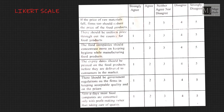The Likert scale may include a number of items or statements, not necessarily just one. It depends upon the number of factors being researched. If there are 7 or 8 factors related to the research object, we may build 5, 7, 8, or 10 statements to check on those factors. Each statement is assumed to represent an aspect of an attitudinal domain connected to one important independent variable.